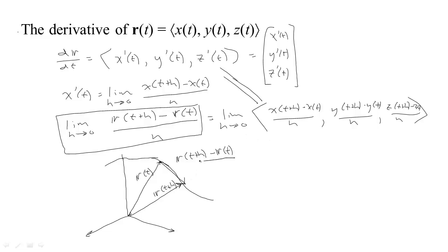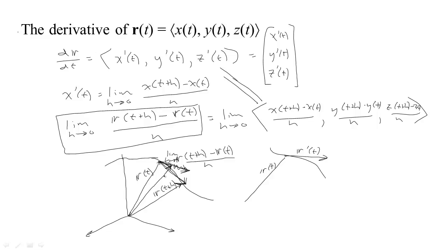So we're taking that difference, which we can see would be this vector, and we're dividing it by H and taking the limit as H tends to zero. As H tends to zero, these two vectors get closer and closer together, so their difference gets smaller — but we're dividing by H, so the smaller H gets, the smaller the number we divide by, which keeps this vector from shrinking away. In the limit as H goes to zero, what we get is that R prime of T is going to be a vector that's tangent to the curve. As H goes to zero, this vector moves back and the difference becomes more and more like a tangent vector. Dividing by H keeps it from disappearing.